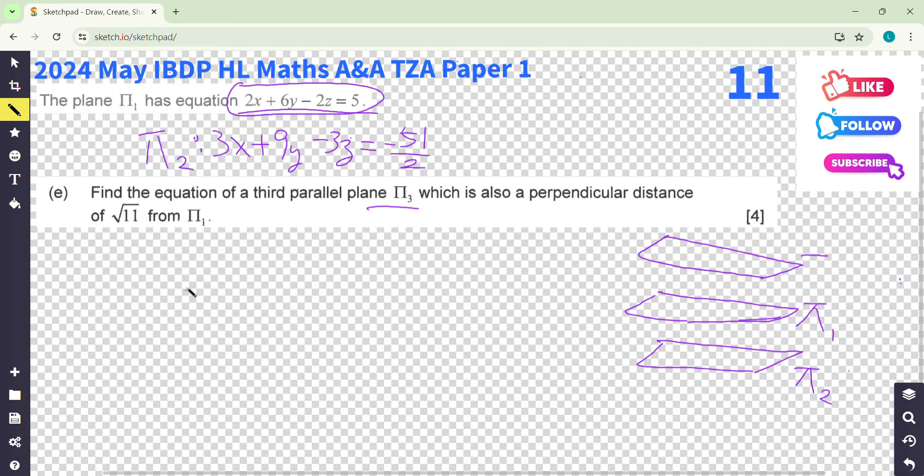So first of all, you need to know what happened. They said the same distance, same distance. First of all, the problem is that they have different coefficients, but actually π_1, 2, 3 are parallel.